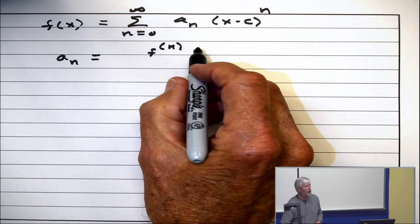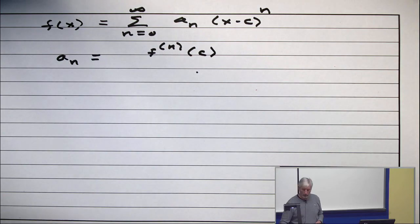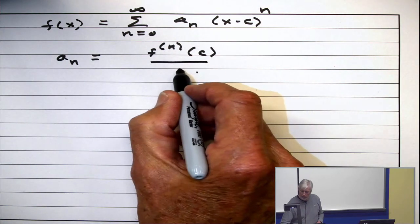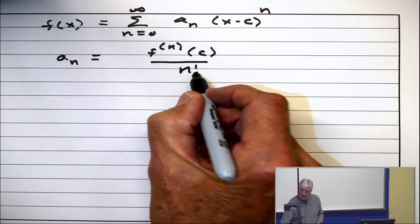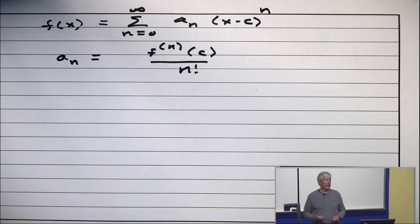Evaluated where? At c. At c. And then divided by n factorial. Yeah, very good. Okay, does everybody vaguely remember this formula from calculus? He got it exactly right.